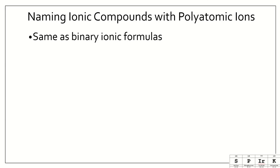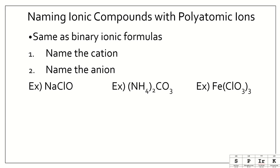Now to name these, you just follow the same rules as the binary ionic formulas. You name the cation first, then name the anion. So again, these polyatomic ions come from our list. So if you need to have that out, please have it out.